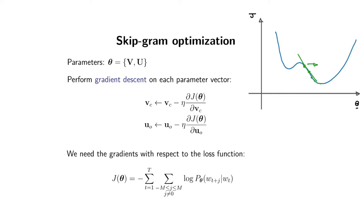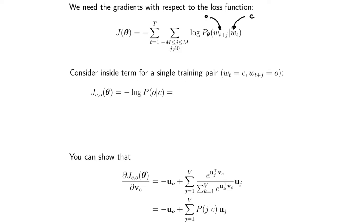Just as a brief reminder, the loss function is based on this probability, which according to the model structure tells you how probable it is to see a particular context word given a center word. That probability is given by the structure of the SkipGram model. We're going to substitute that structure into the probability, then take the partial derivatives of J, the loss function, with respect to the different parameters — looking at one input-output example, one negative log likelihood term for one pair of center word with a corresponding context word.